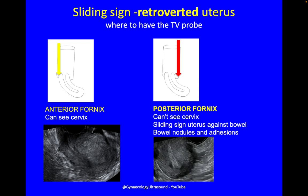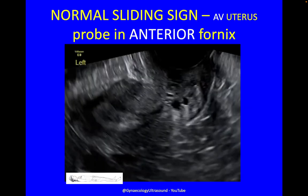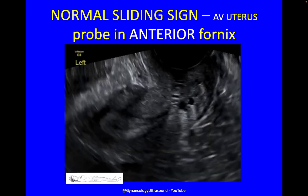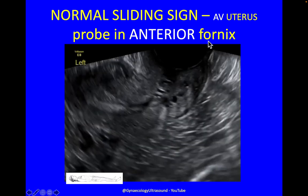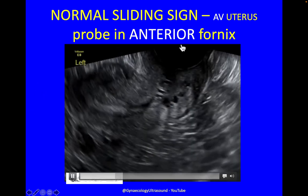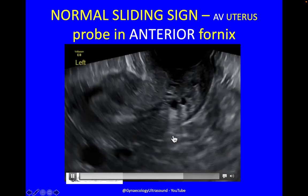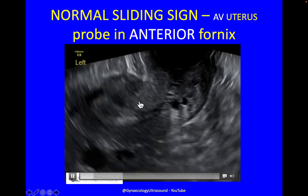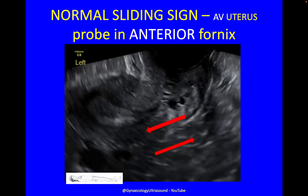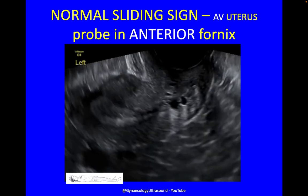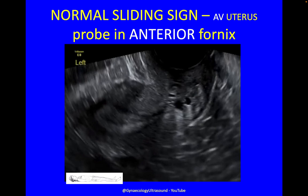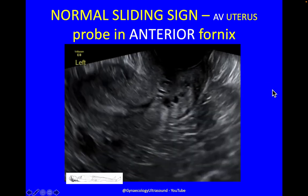In a retroverted uterus, if you have your probe in the anterior fornix you can see the cervix but it's very difficult to judge mobility there. Put your probe in the posterior fornix and you can judge mobility and also see bowel nodules and adhesions. This is a normal sliding sign of an anteverted uterus with the probe in the anterior fornix. I'm very gently pressing with my probe — you can see that the movement between the uterus and the bowel is very, very easy, moving in opposite directions. The movement of the probe is so gentle that mostly patients don't even notice.